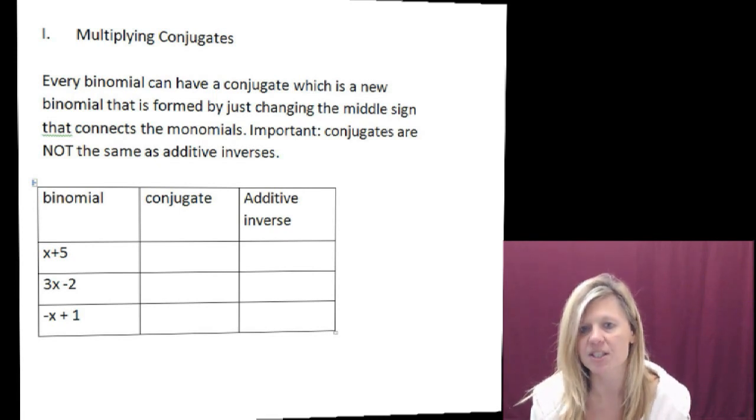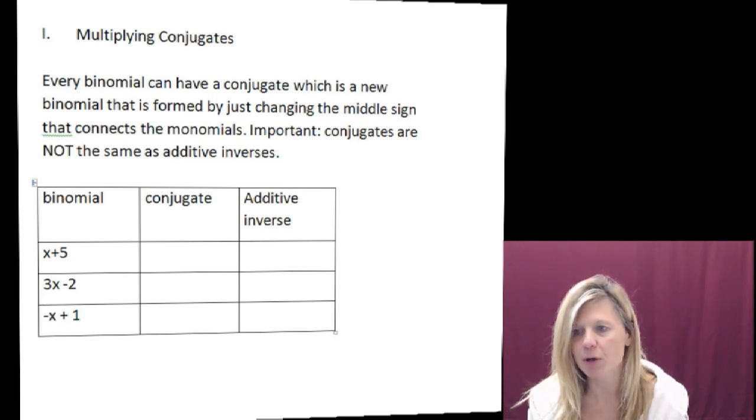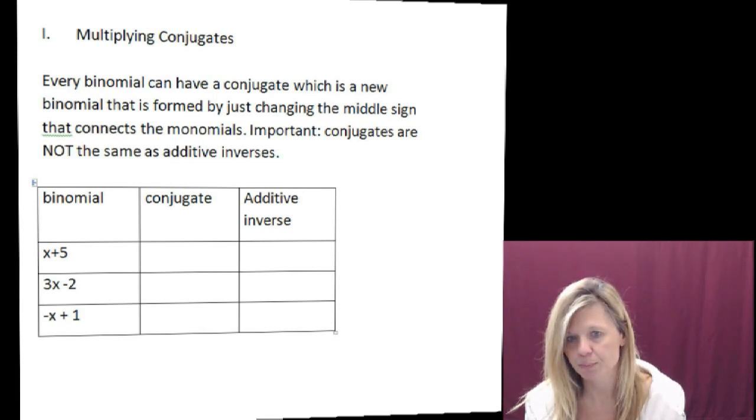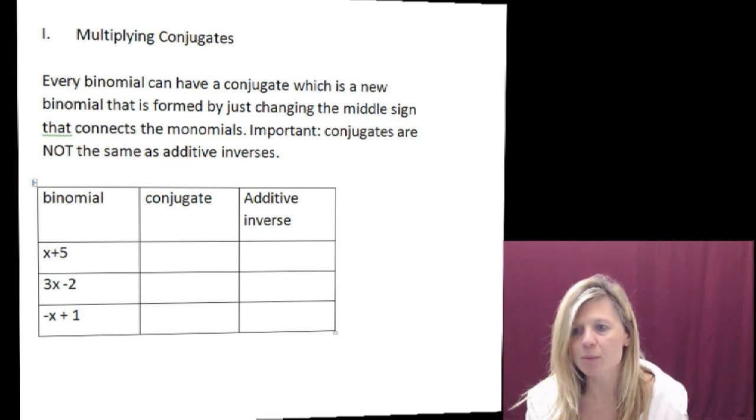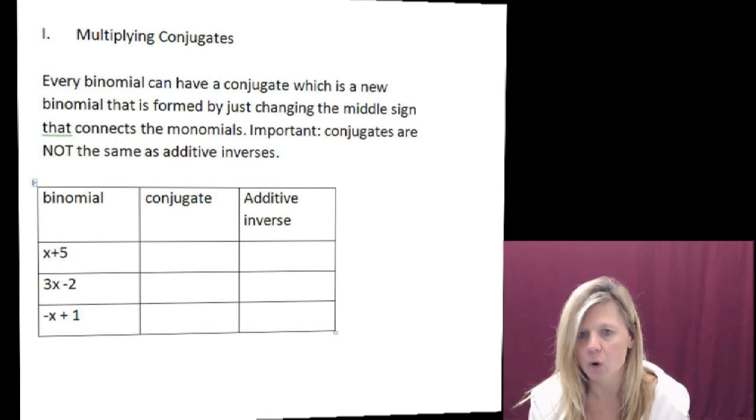if I have the binomial x plus 5, the conjugate would be x minus 5. If I have the binomial 3x minus 2, the conjugate would be 3x plus 2. If I have the binomial negative x plus 1, the conjugate would be negative x minus 1.